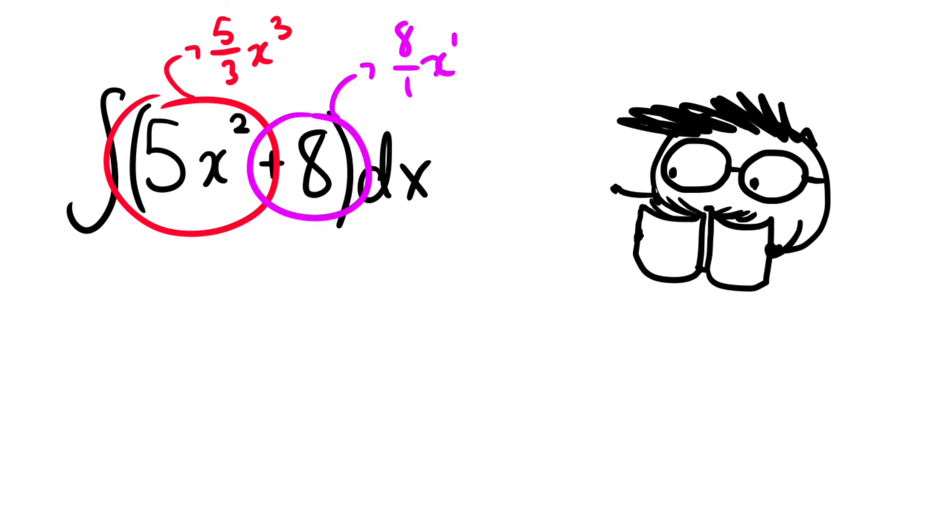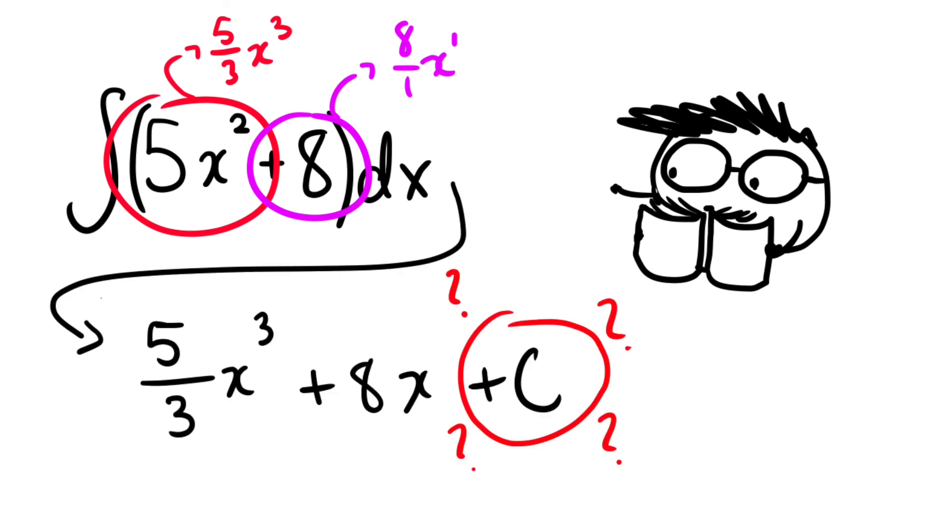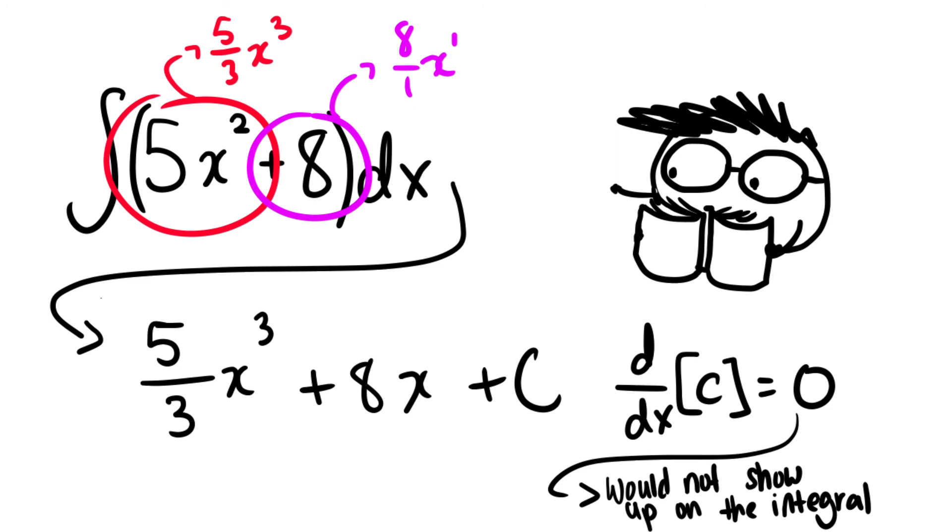the integral for the entire thing would be this. The c is there because c is a hypothetical constant and we will never know if an integral slash antiderivative has had a constant or not since the derivative of a constant is always 0. And so that's calculus in a nutshell.